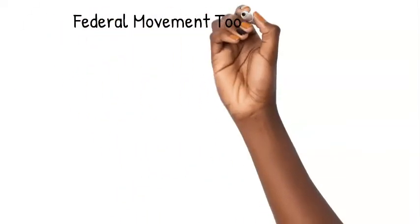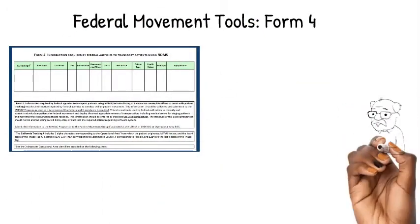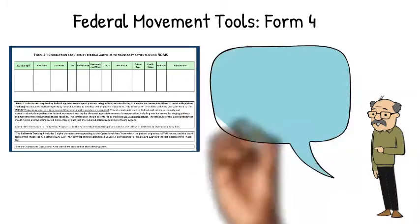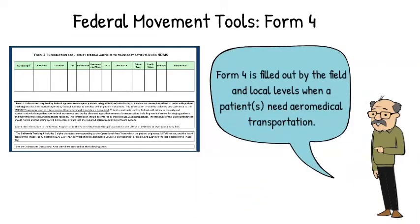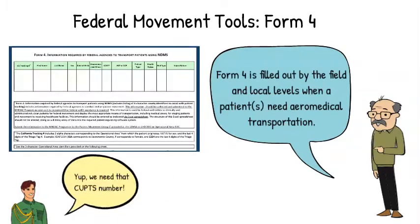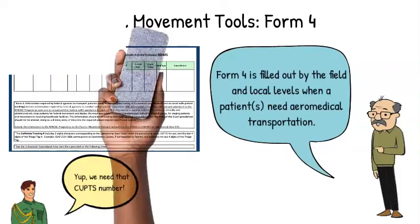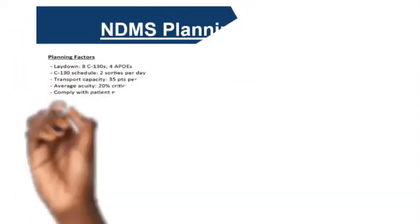Form 4 is how healthcare facilities and evacuating facilities connect patients into federal aeromedical evacuation. The minimum data set the federal government requires includes the unique CUPS number, first name, last name, sex, date of birth, and whether the patient is a minor.